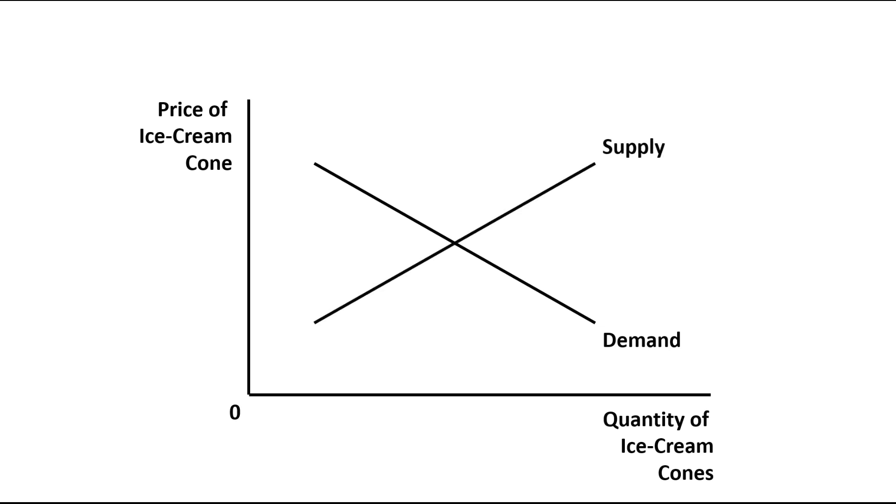Here we have two axes. On the vertical axis, we have taken price of ice cream cone. And on the horizontal axis, we have taken quantity of ice cream cones. This is the demand curve. Supply curve.